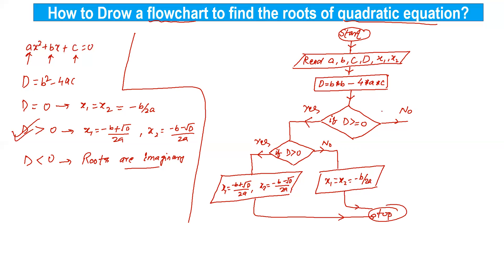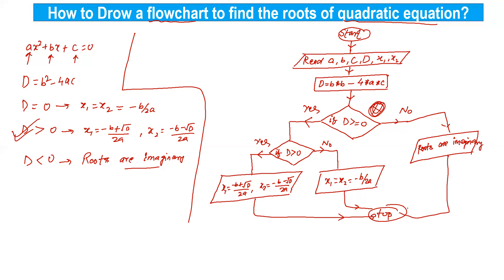But if the first condition — D greater than or equal to 0 — is false, that means D is less than 0. If D is less than 0, we print here that the roots are imaginary. After that, Stop. This is the flowchart to find roots of a quadratic equation.